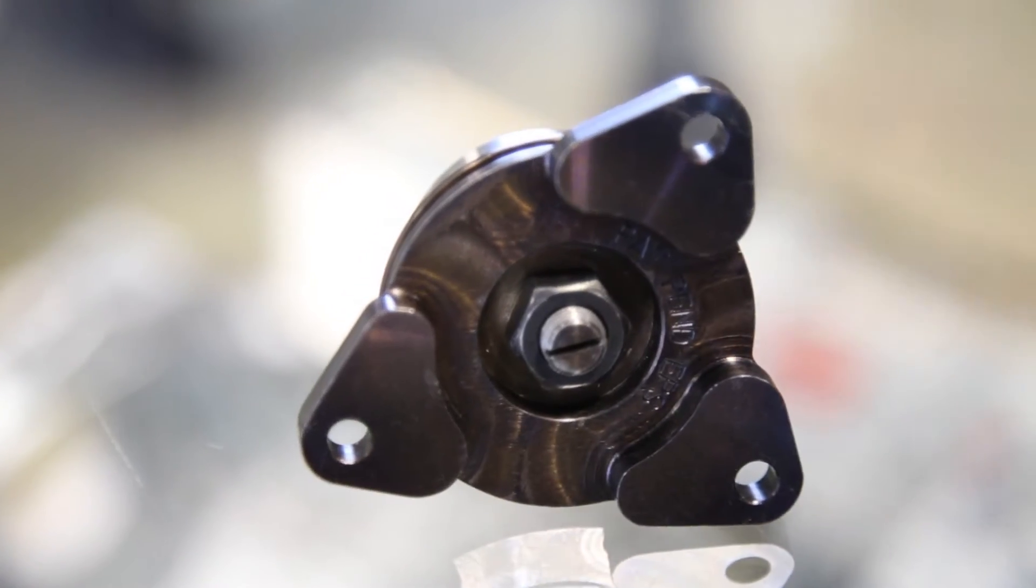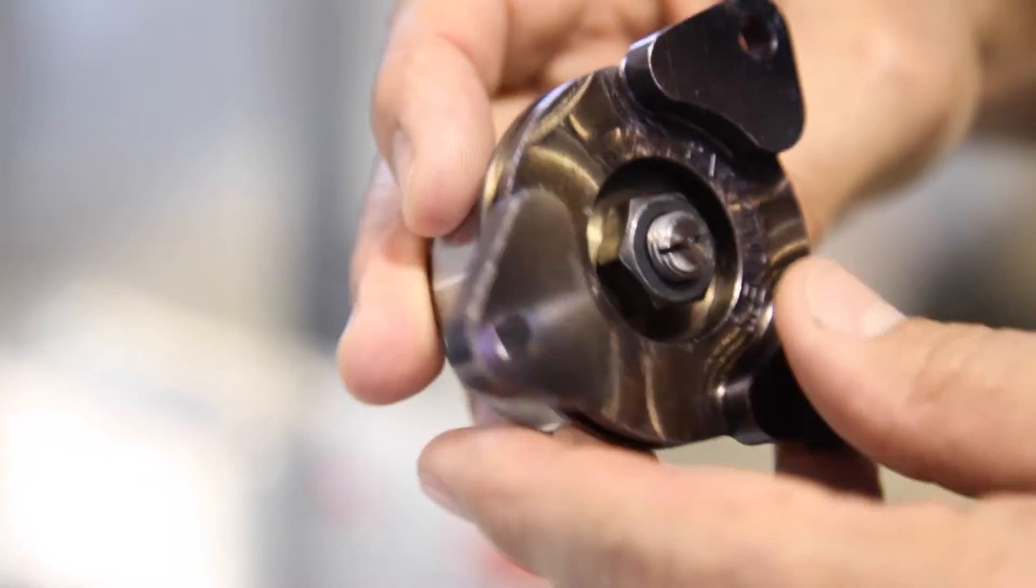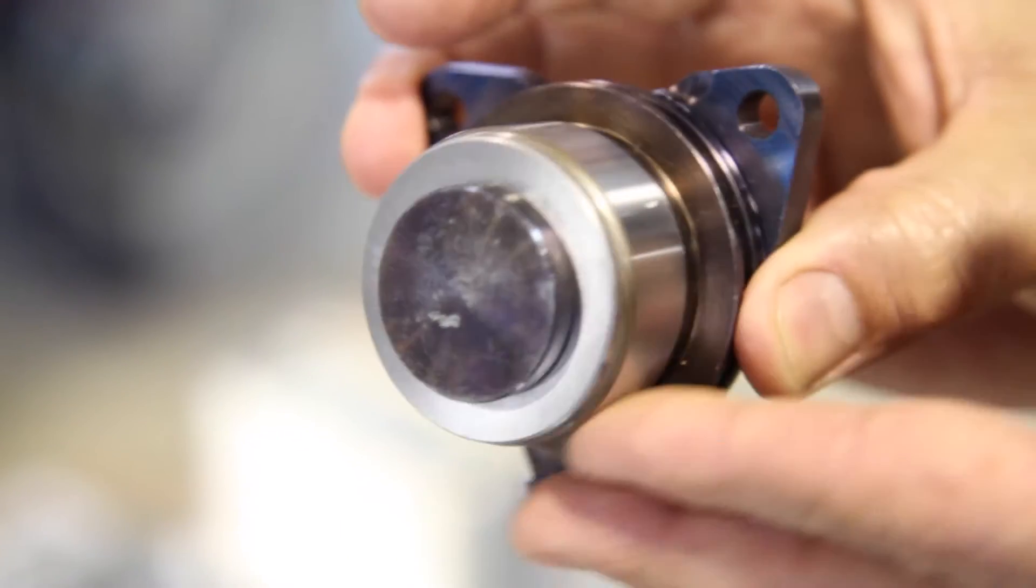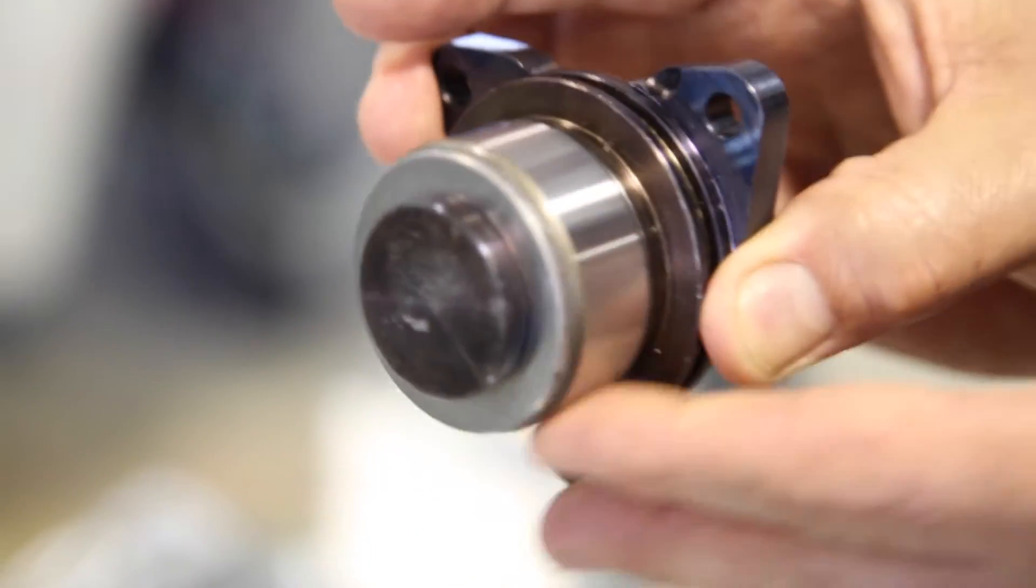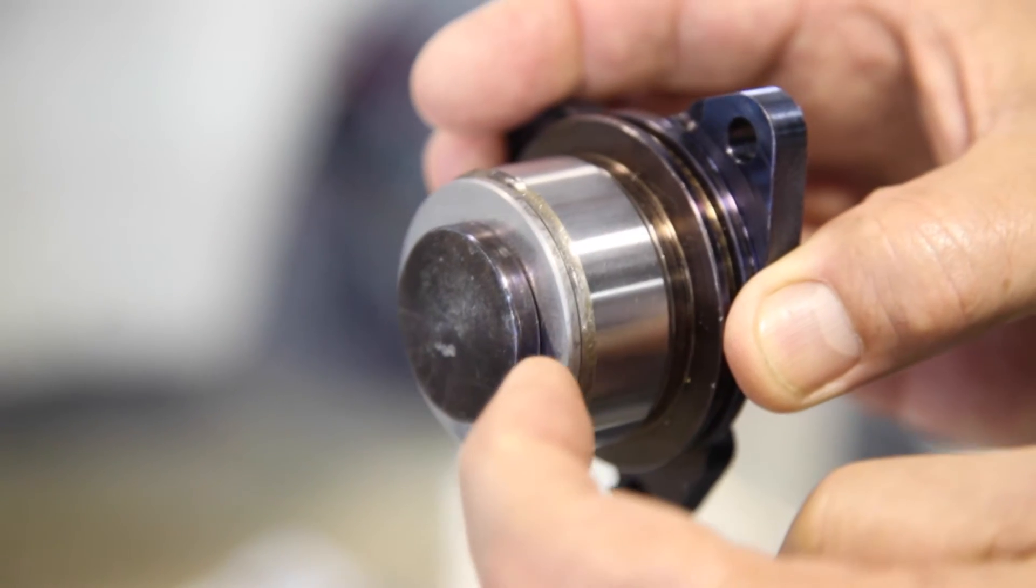This is an IMS cylindrical roller bearing for Porsche Boxster and 996. It is a cylindrical roller bearing with thrust control here and here.